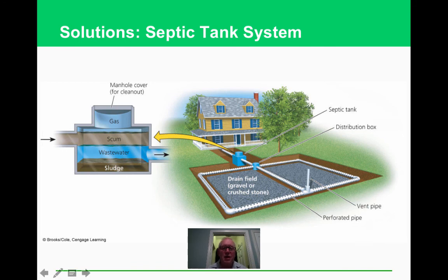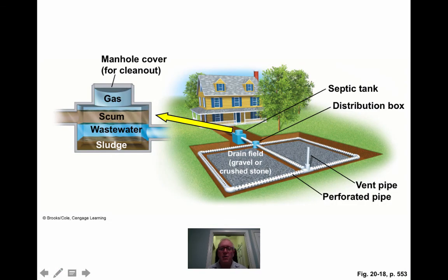A septic tank is an alternative to a public sewer system for individual homes. Sludge collects at the bottom of the tank and is periodically pumped out by a service company. This is a localized method of waste treatment that avoids sending waste directly to a wastewater treatment plant.